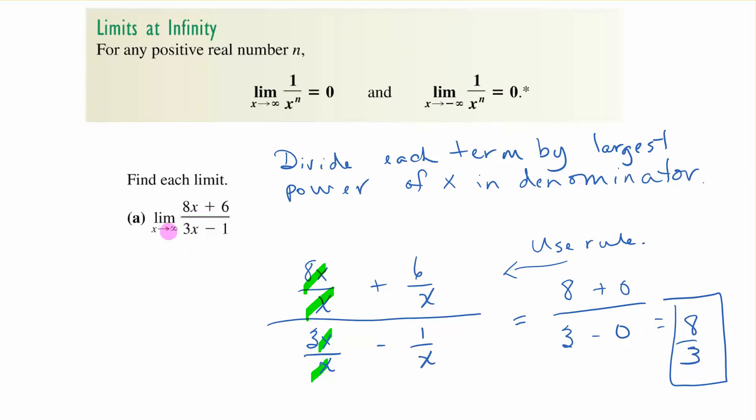The limit as x approaches infinity of 8x plus 6 over 3x minus 1. The technique is to divide each term by the largest power of x in the denominator. Well that is just x. We don't have an x squared or x cubed. So I take 8x divided by x plus 6 over x divided by 3x over x minus 1 over x. Those x's cancel out and I'm left with 8. Anytime you have the 6 over x this rule comes into play and that's equal to 0. That's equal to 3. That's equal to 0. So our ultimate answer is 8 thirds.